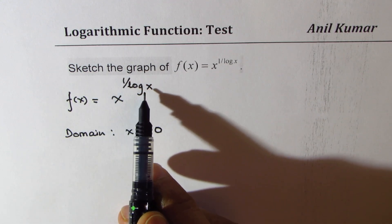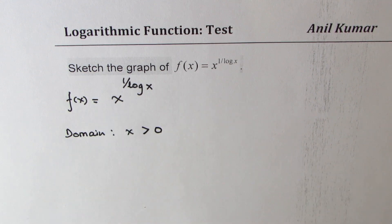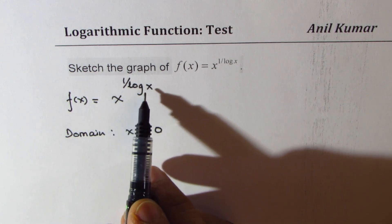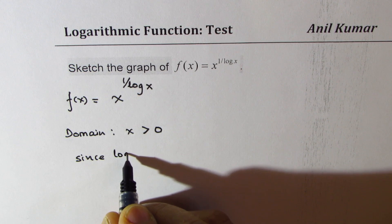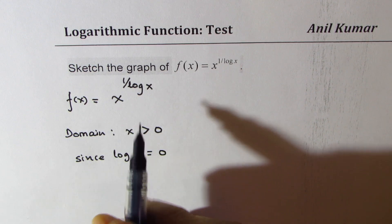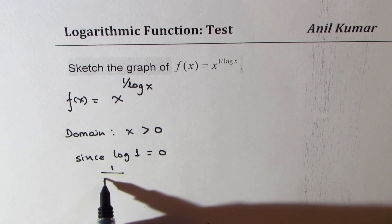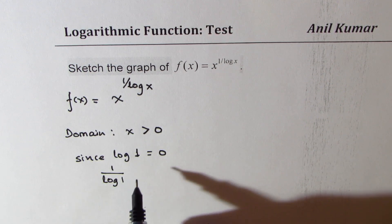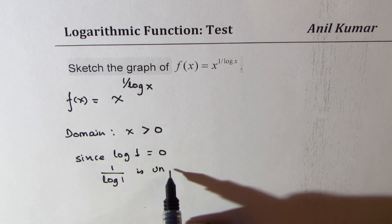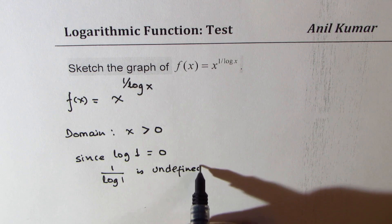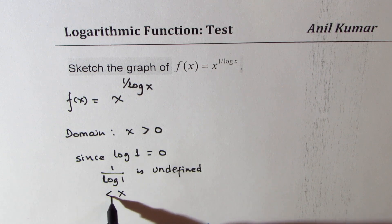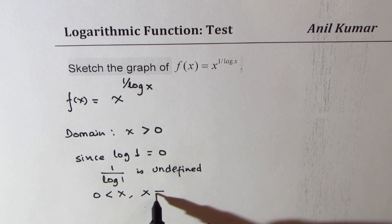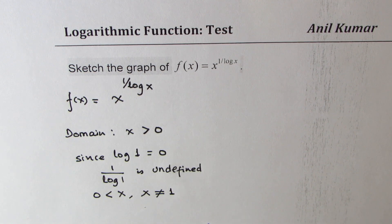Now since we have 1 over log x, log of 1 is 0. Since log of 1 is equal to 0, and we cannot divide by 0, that means 1 over log of 1 is undefined. And therefore, the domain of the function is x greater than 0 but x not equal to 1. So that is the domain in which we need to sketch this particular function.